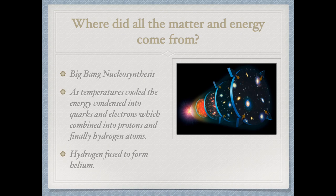Where did all this matter and energy come from? It came from the Big Bang. All the energy and matter in the known universe formed as the Big Bang cooled down, and we started to get hydrogen, helium, a little bit of lithium and beryllium. The rest of the elements all came from stars, but the original stuff came as the Big Bang cooled and quarks, electrons, and protons were able to form.